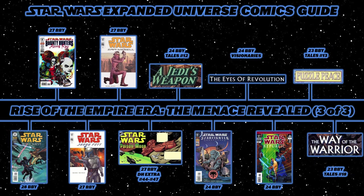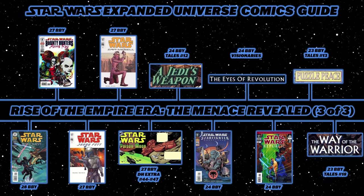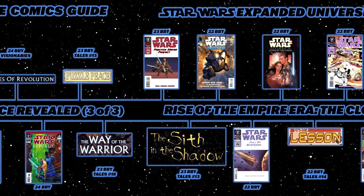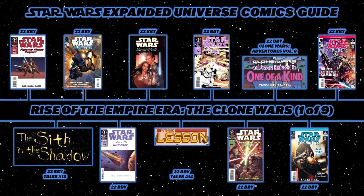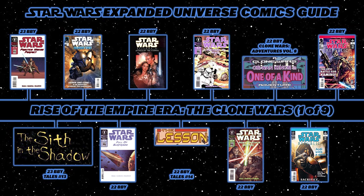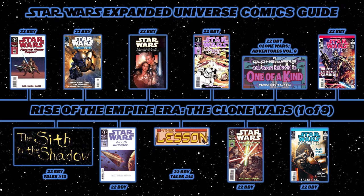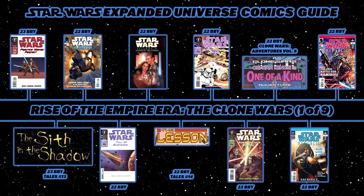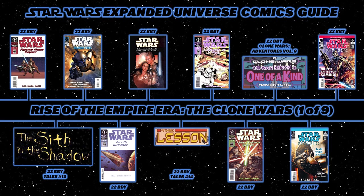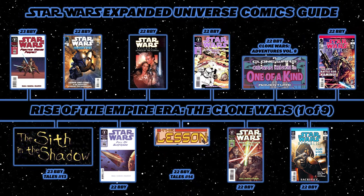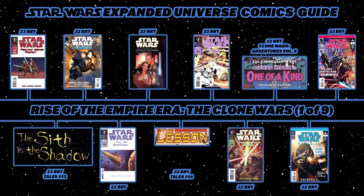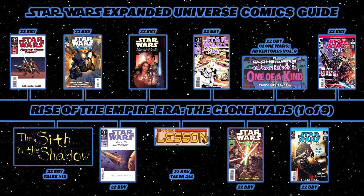Then read Star Wars Tales number 13's Puzzle Piece, and Star Wars Tales number 10's The Way of the Warrior — following Jango Fett and Boba Fett before Episode II. Moving into the Clone Wars section, the first of the Hasbro/Toys R Us exclusive comics: Practice Makes Perfect, following Anakin and Obi-Wan trapped by droids. Then Star Wars Tales number 13's The Sith and the Shadow, and the first two issues of Blood Ties, a tale of Jango and Boba Fett. Then another Hasbro/Toys R Us exclusive, Full of Surprises, seeing Obi-Wan ambushed by Jango Fett.